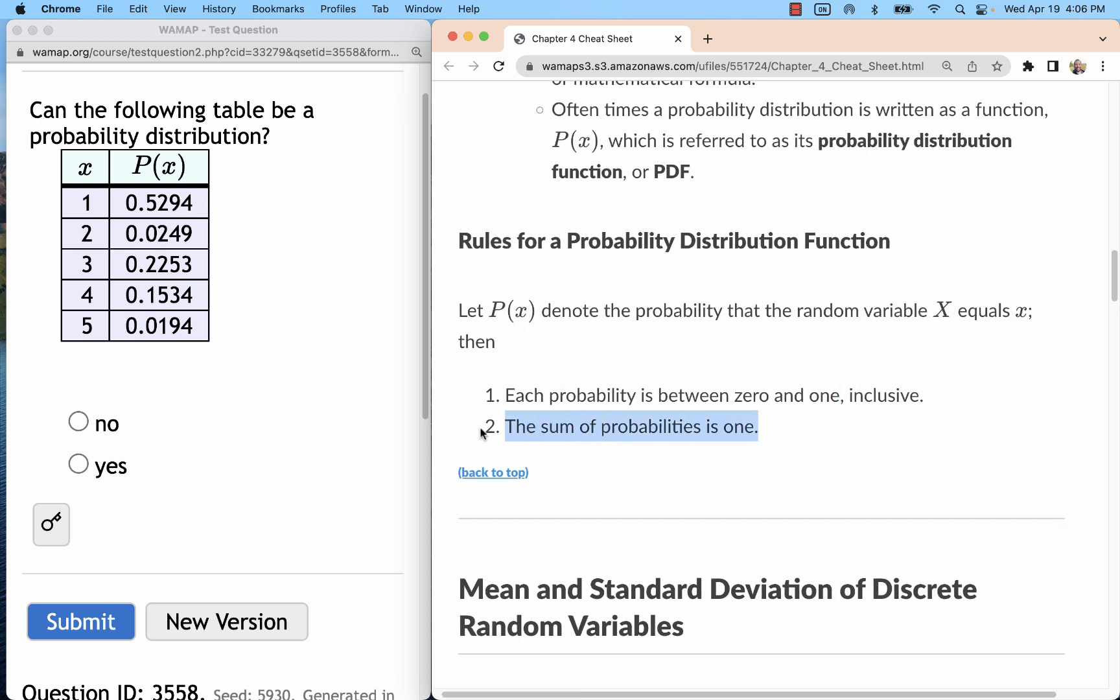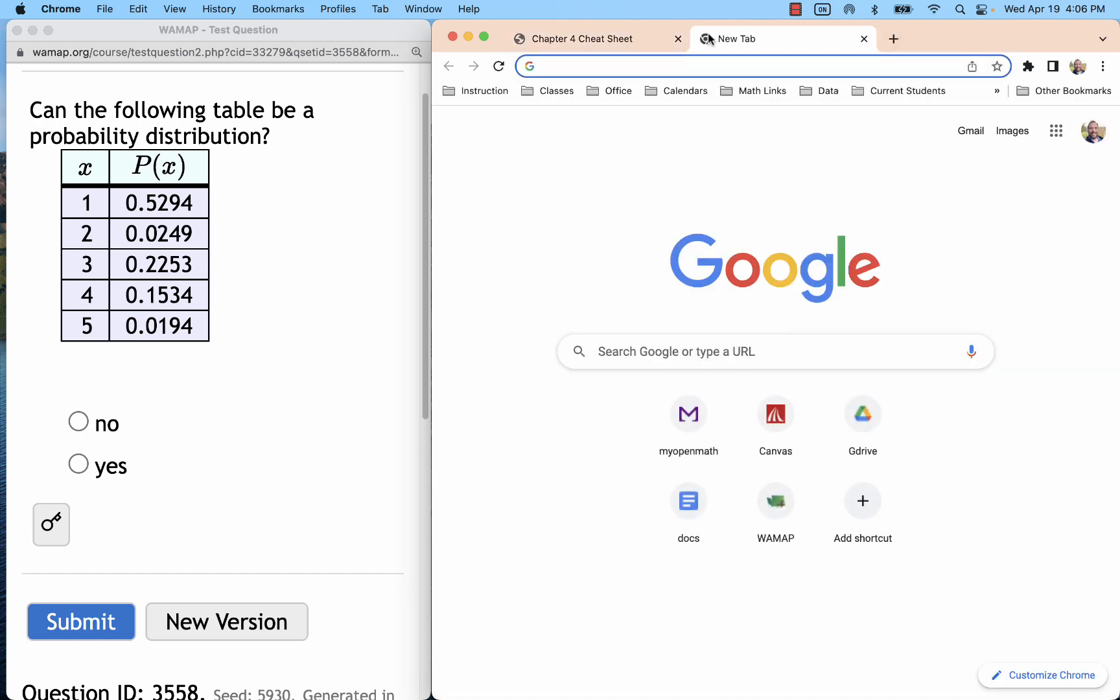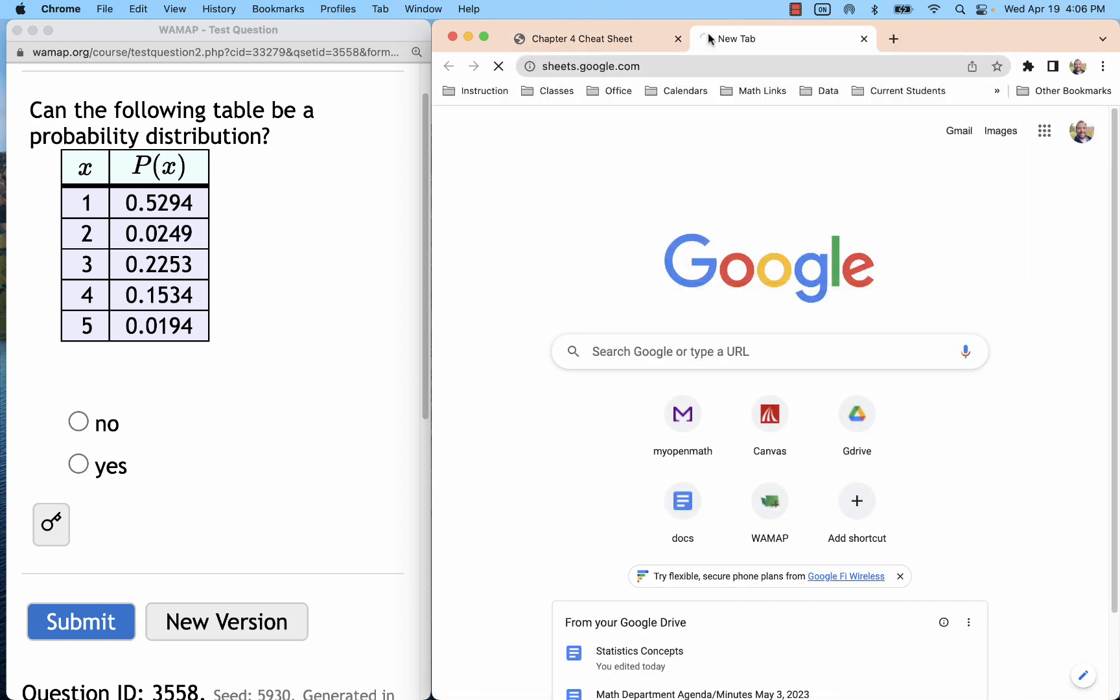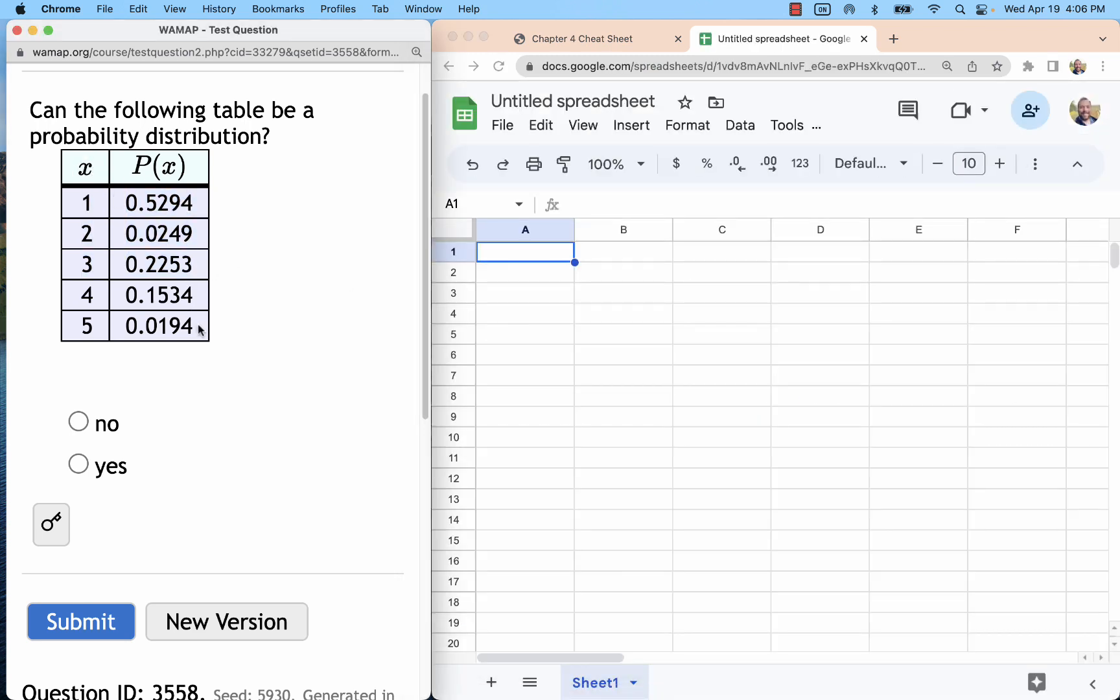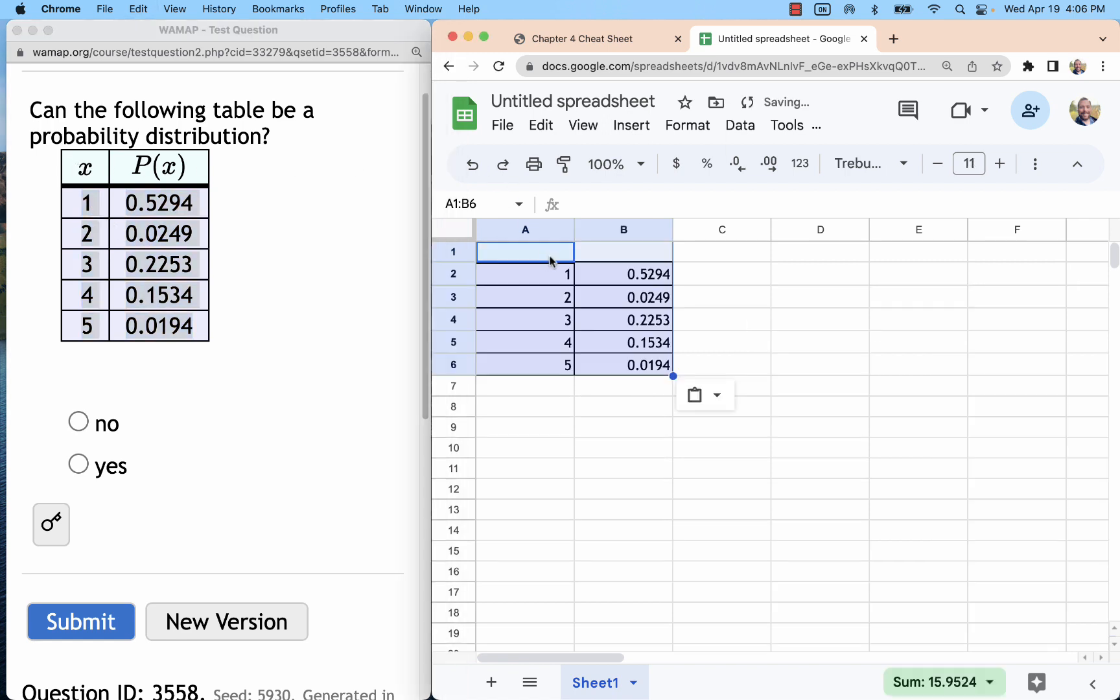The other thing we need to know is do the sum of the probabilities add up to one. Really easy to do that in Google Sheets. I usually just open a blank sheet really quick and copy and paste. You can do just the numbers or you can include the headings if you want. So ctrl c ctrl v.